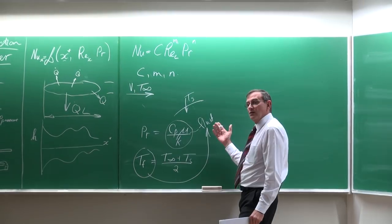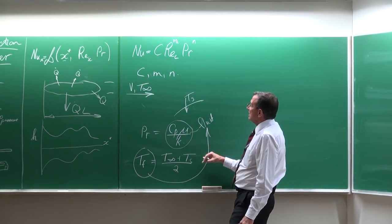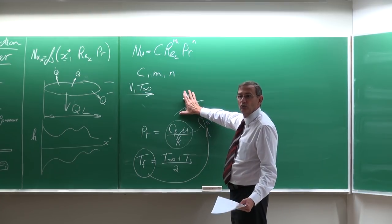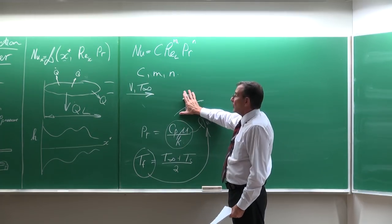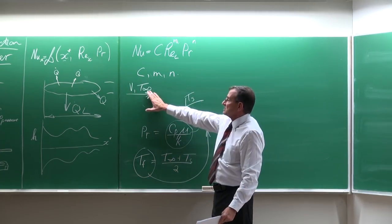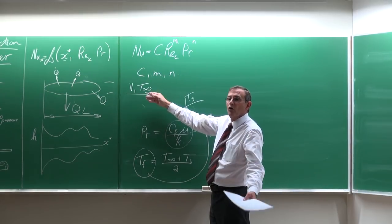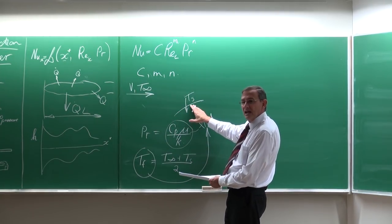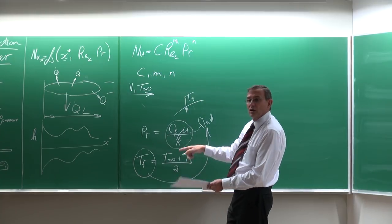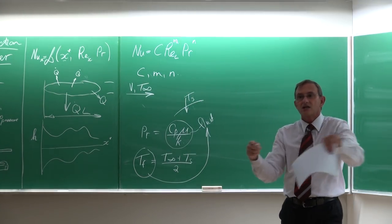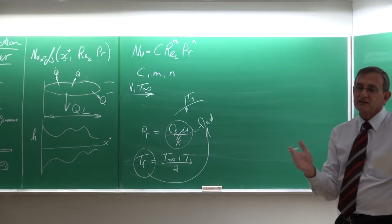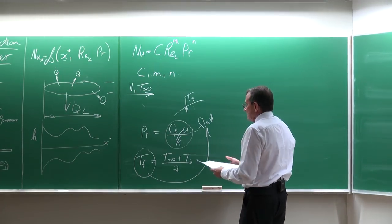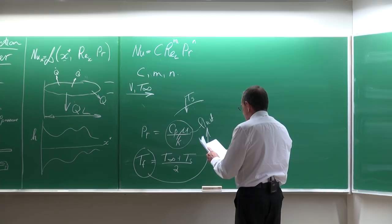If the surface temperature is unknown, you start with the properties at the known free stream temperature, go through the calculation to determine T_s, then recalculate the film temperature, get revised properties, and repeat the calculation. Normally you don't need to iterate more than two times — it converges very quickly. That is one way of handling the fluid properties.